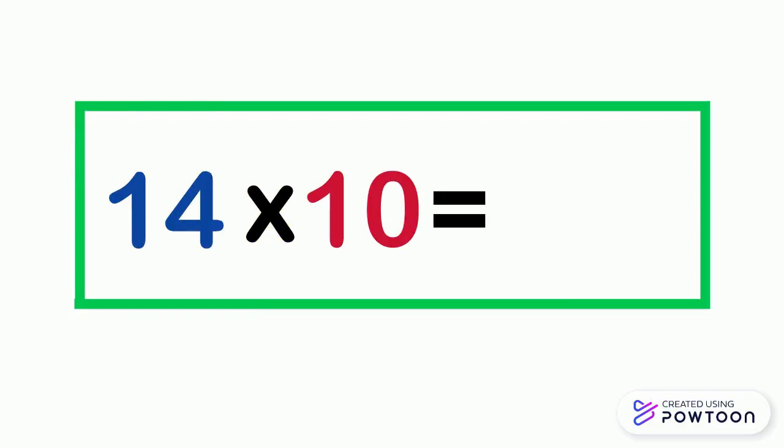Let's take another example. 14 times 10. To multiply 14 by 10, just write 14, then put the 0 to the right of 14. 14 times 10 equals 140.